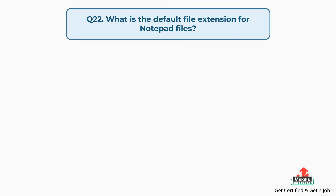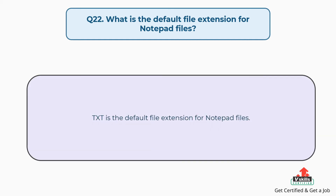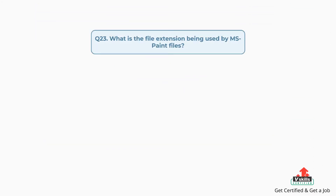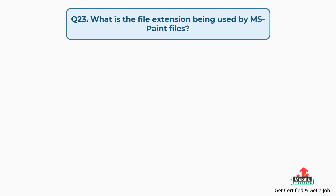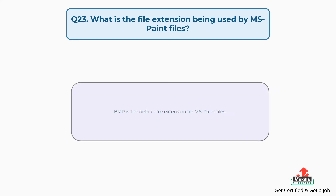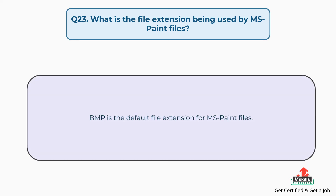Question number twenty-two: what is the default file extension for Notepad files? The answer is, TXT is the default file extension for Notepad files. Question number twenty-three: what is the file extension used by MS Paint files? The answer is, bitmap image file BMP is the default file extension for MS Paint files.